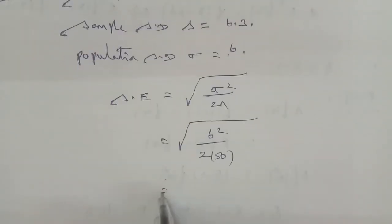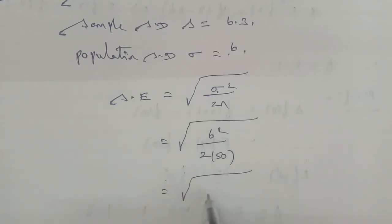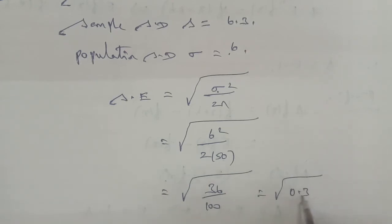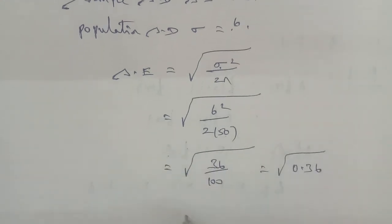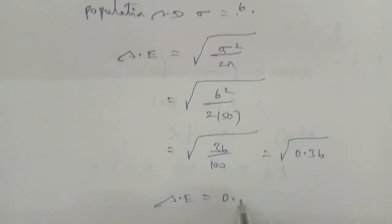Next, 6 squared is 36, so 50 into 2 is 100. Dividing 36 by 100 equals 0.36. Taking the square root, the standard error is equal to 0.6.